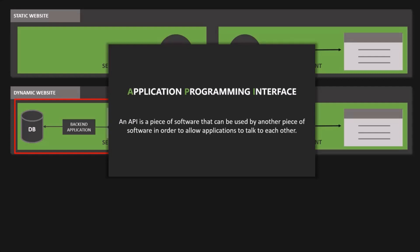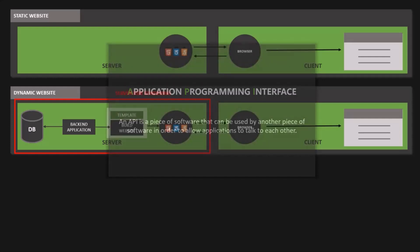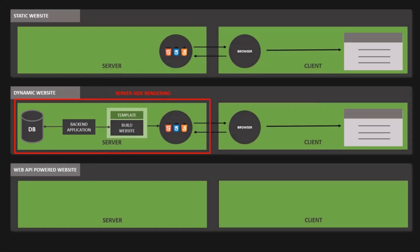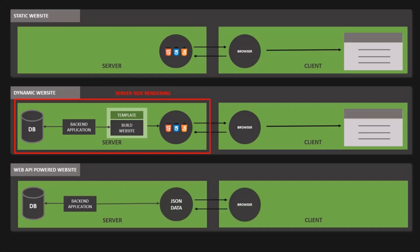In simple terms, an API allows two or more pieces of software to talk to each other. Just like a dynamic website, in case of an API-powered website, we have a database on the server and an app that fetches data from the database each time a client makes a request. So in that sense, the API-powered website is actually quite similar to the dynamic website — both work dynamically. The big difference is that with a Web API, we only send data in the response to the client; we do not send HTML.